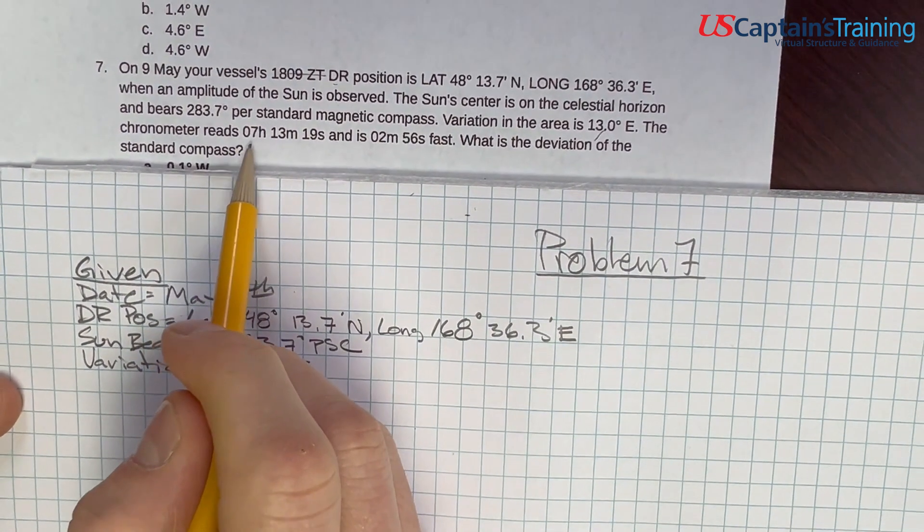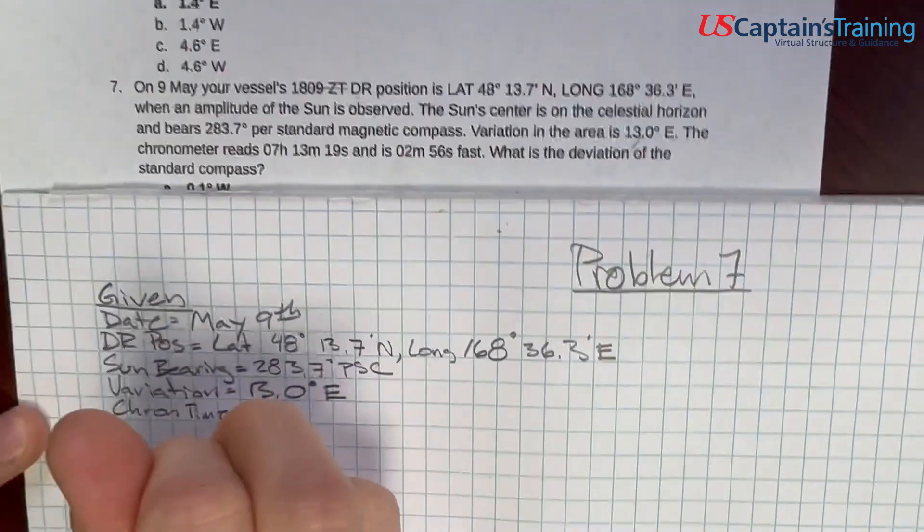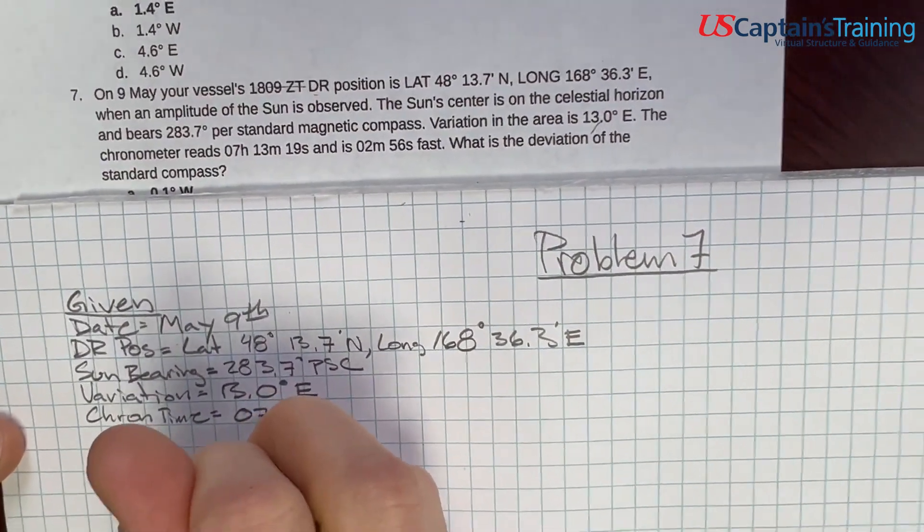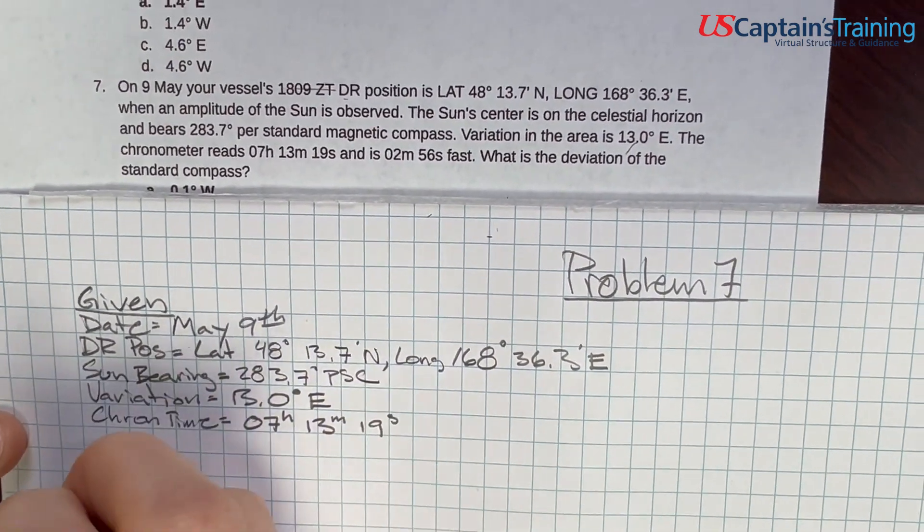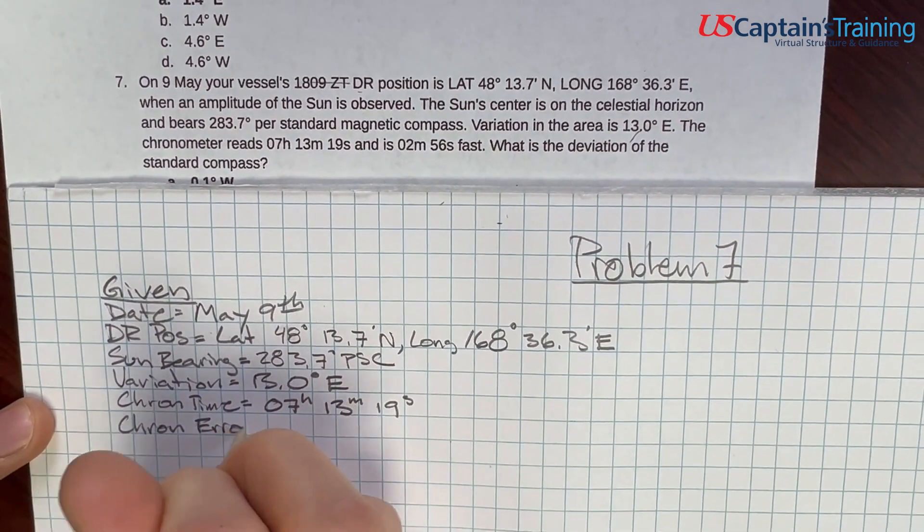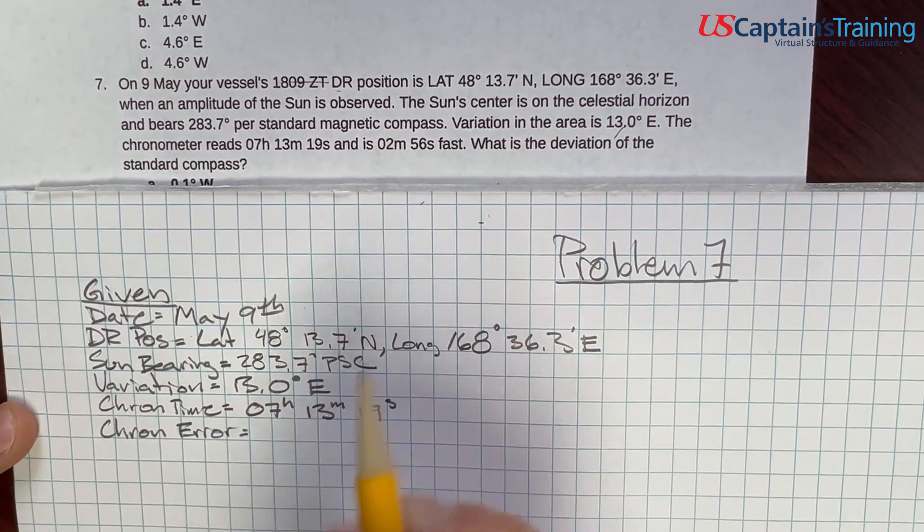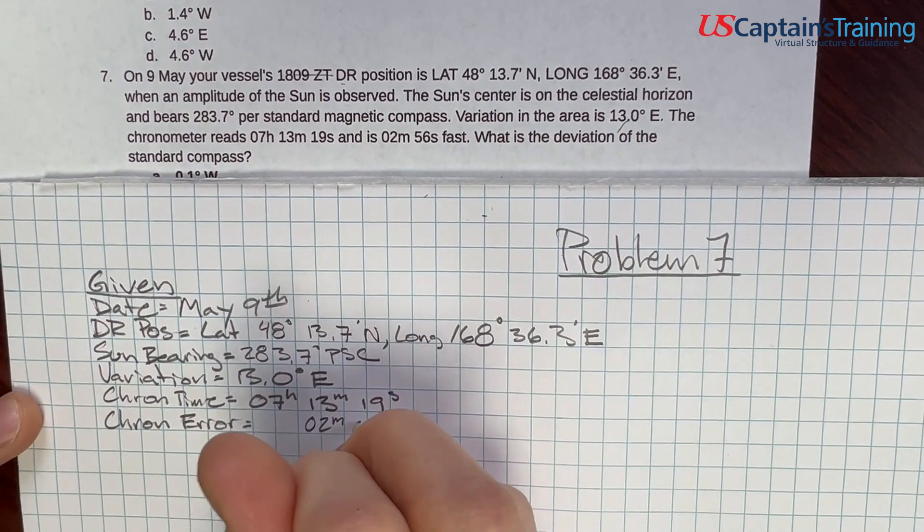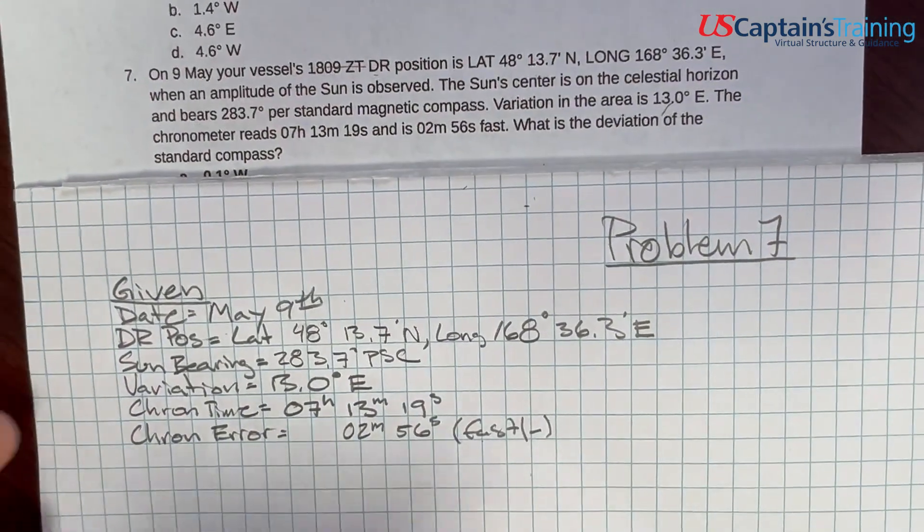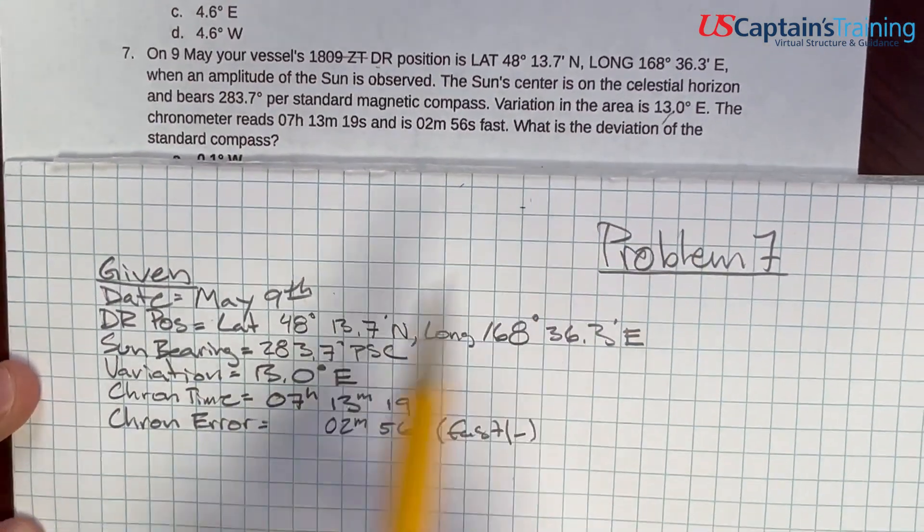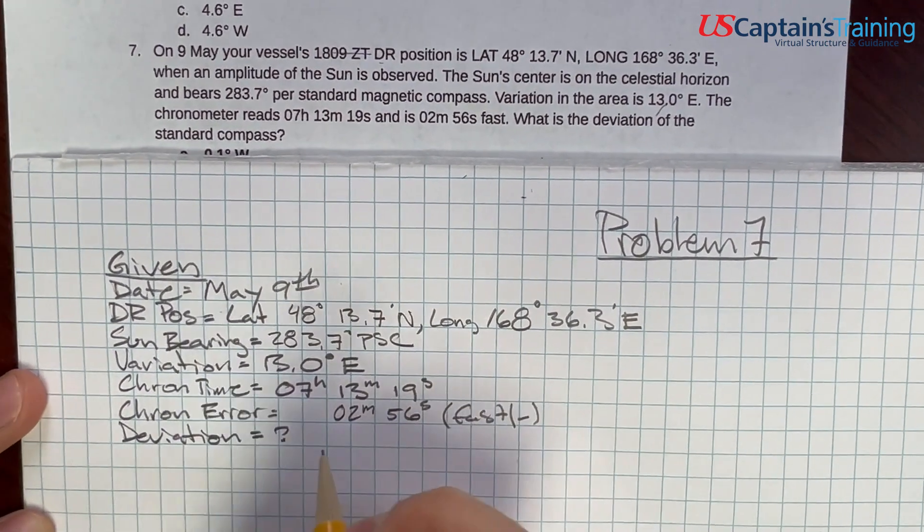And the variation in the area is 13.0 degrees east. So variation equals 13.0 degrees east. The chronometer reads 7:13:19, the chron time. Chron time equals 7:13:19 hours, minutes, seconds. And the chron error equals 2 minutes 56 seconds fast. And when it's fast, we subtract it to get it back down to correct. So what is the deviation of the standard? They want to know deviation is what we're calculating in this problem.